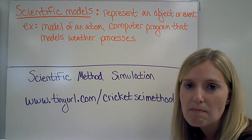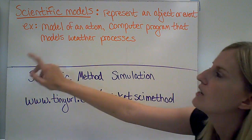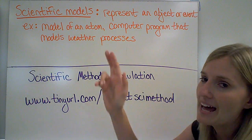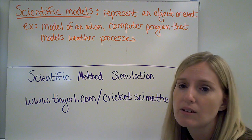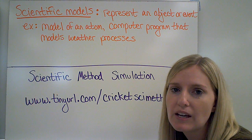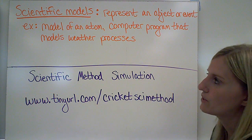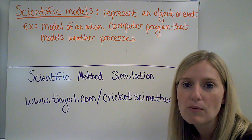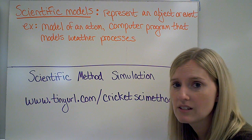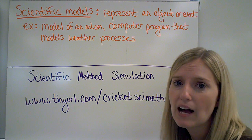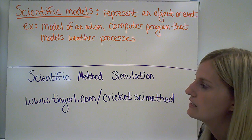The last thing is scientific models. In science, we use a model to represent an object or an event. For example, to model an atom — because I can't see an atom — I can come up with some sort of visual to help me understand what is really going on. I can use computer programs to model weather processes, or to determine what it would be like if an earthquake happened in a particular place, without actually having to experience it. Those are scientific models.